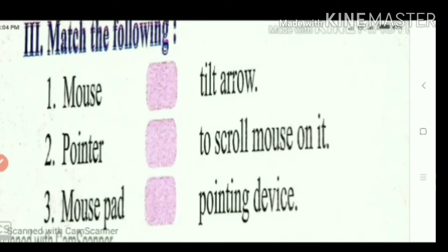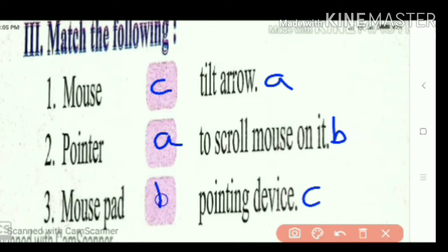Then now, third question: match the following. You want to write the numbers. Here, mouse. Mouse will match with pointing device. So which is the pointing device number? C. You consider it as A, B, C. So mouse is C, pointing device. Pointer, tilt arrow, that is A. Mouse pad to scroll on it, B.